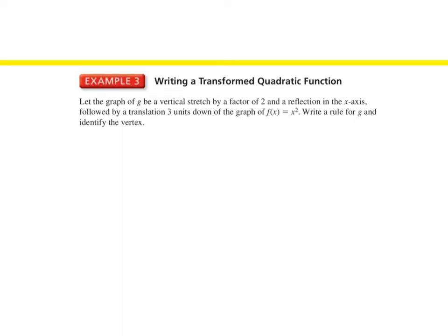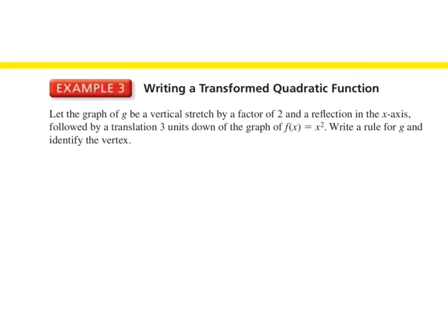For these last two examples, we're going off of what we did yesterday. It's going to give us transformations, and we have to apply them to our function. So this says: let the graph of g be a vertical stretch by a factor of 2 and a reflection in the x-axis, followed by a translation 3 units down of the graph of f of x equals x squared. Write a rule for g and identify the vertex.